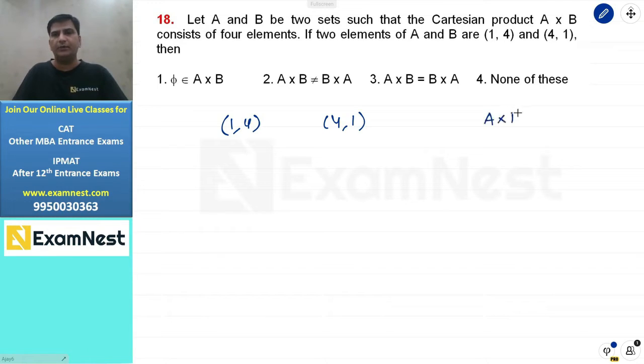If we write A into B, then we will have two elements given. One is (1,4), one is (1,1), (4,4), and (4,1). So these are our four elements.